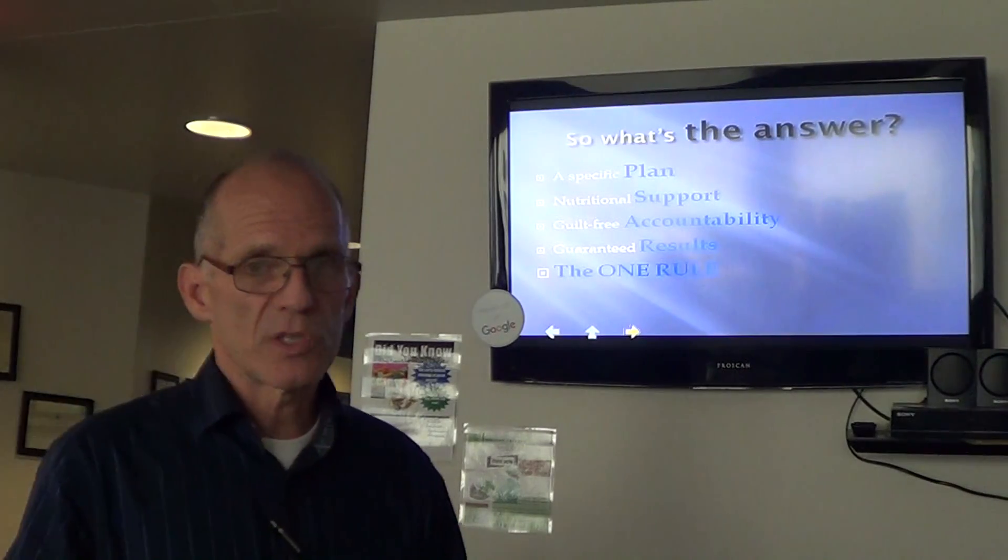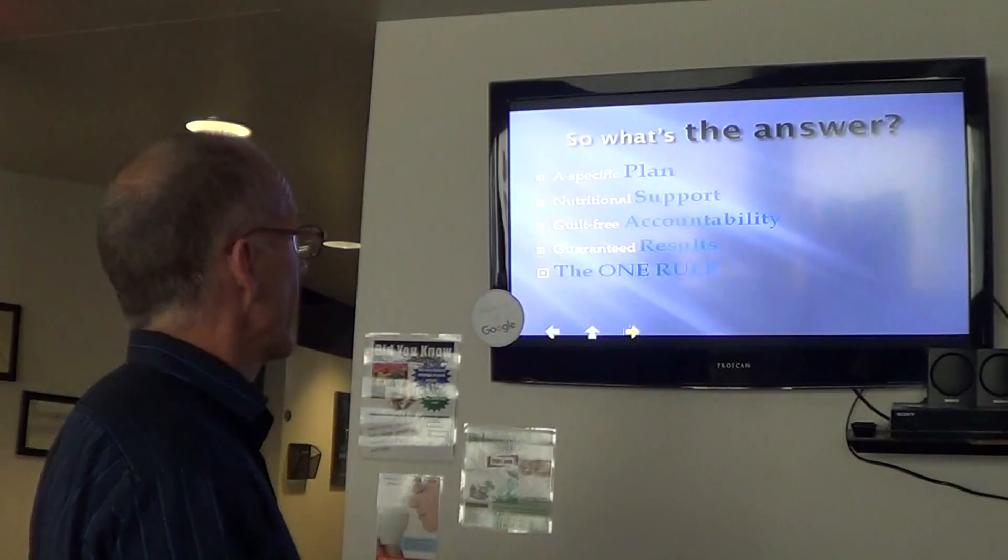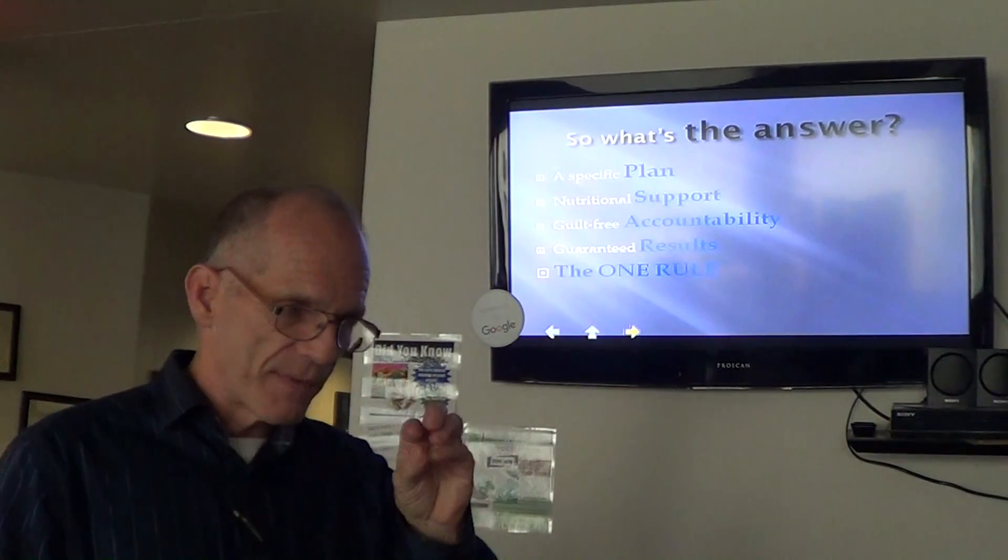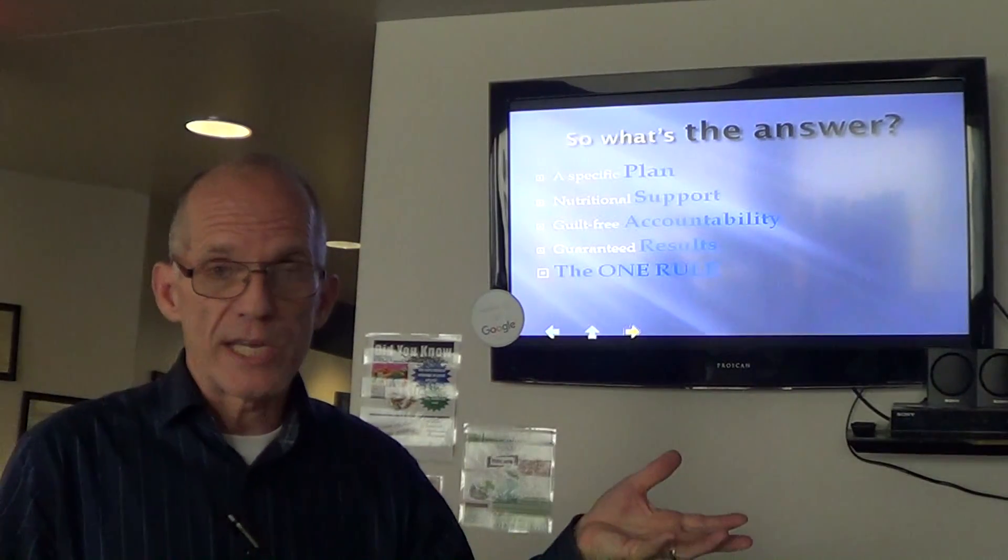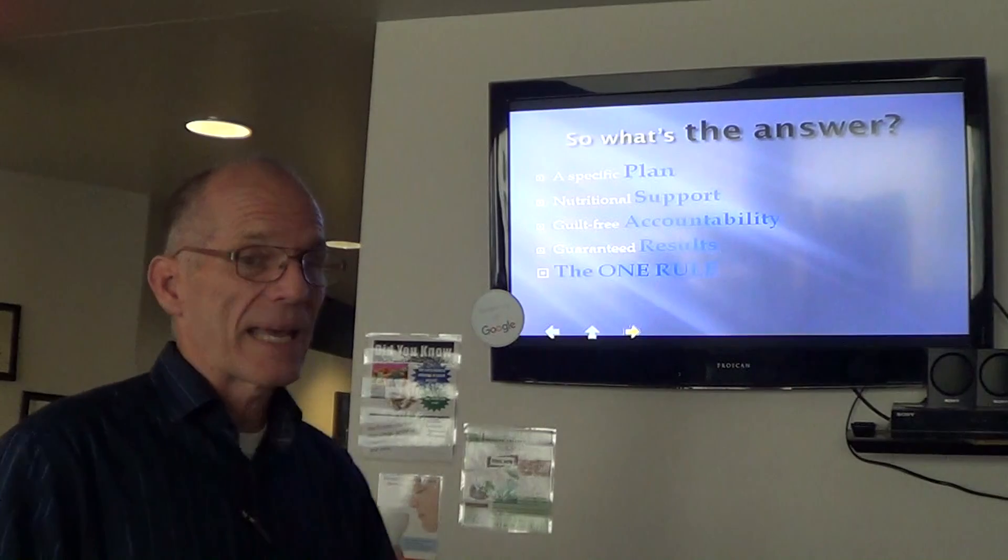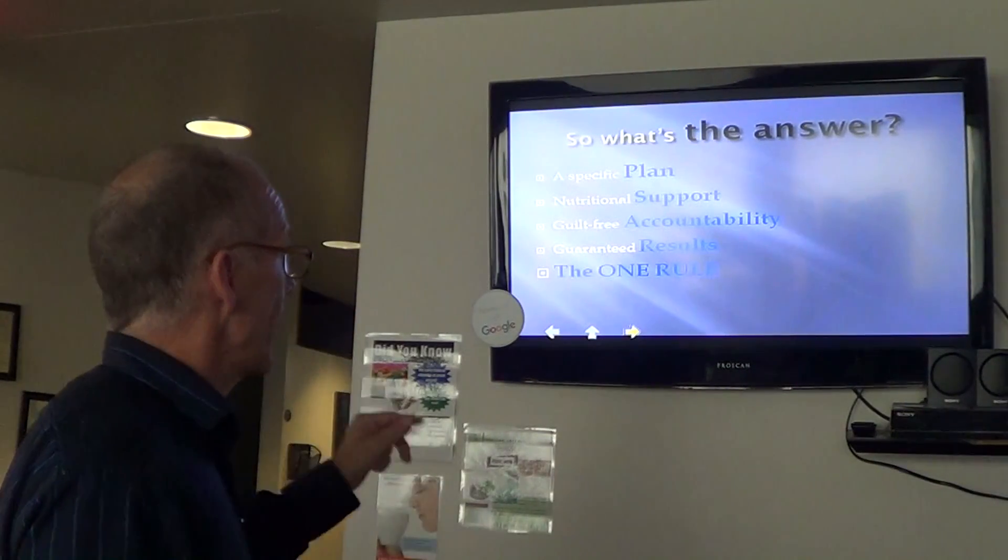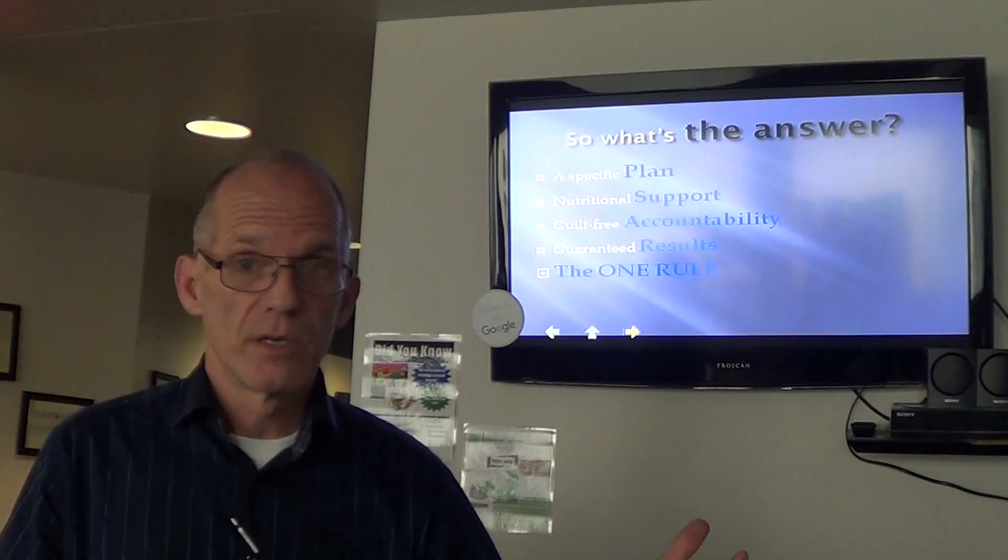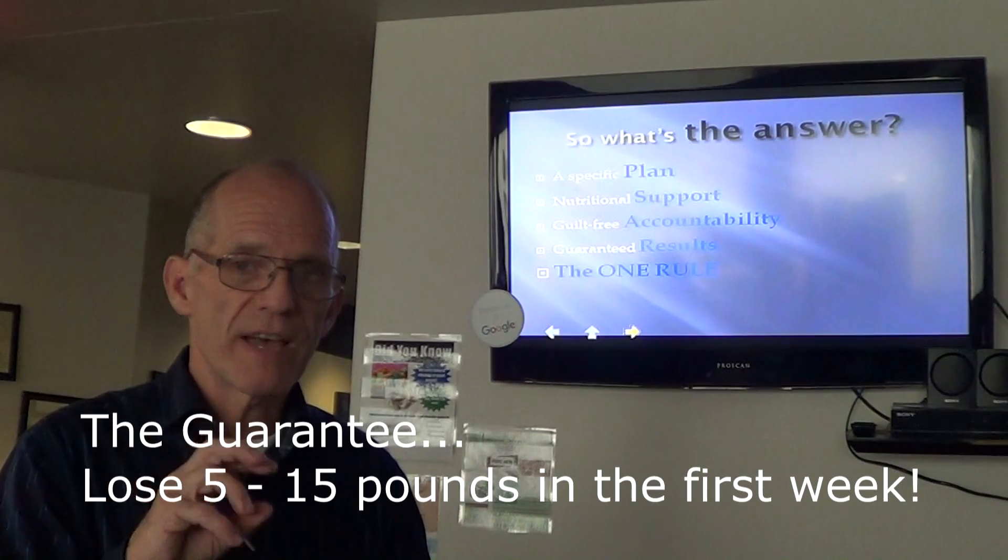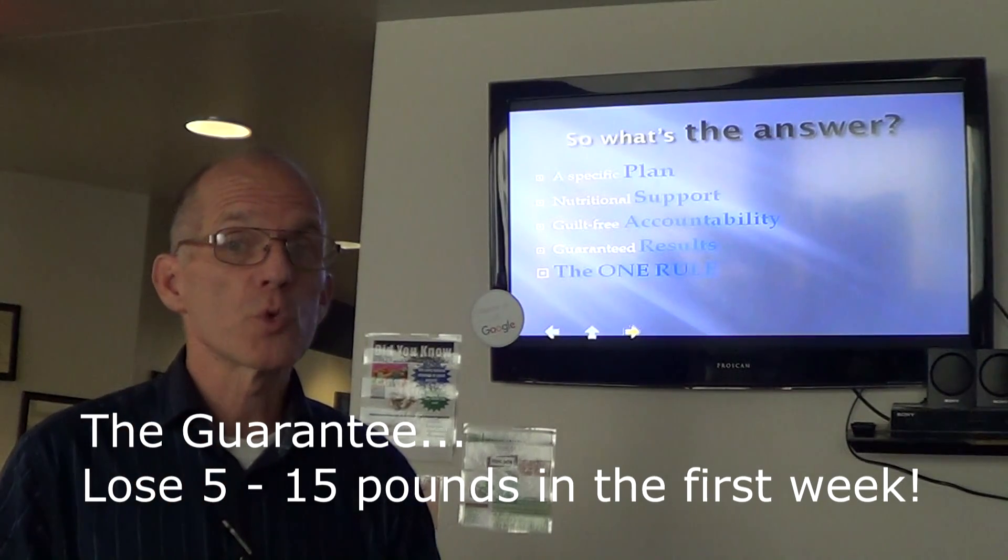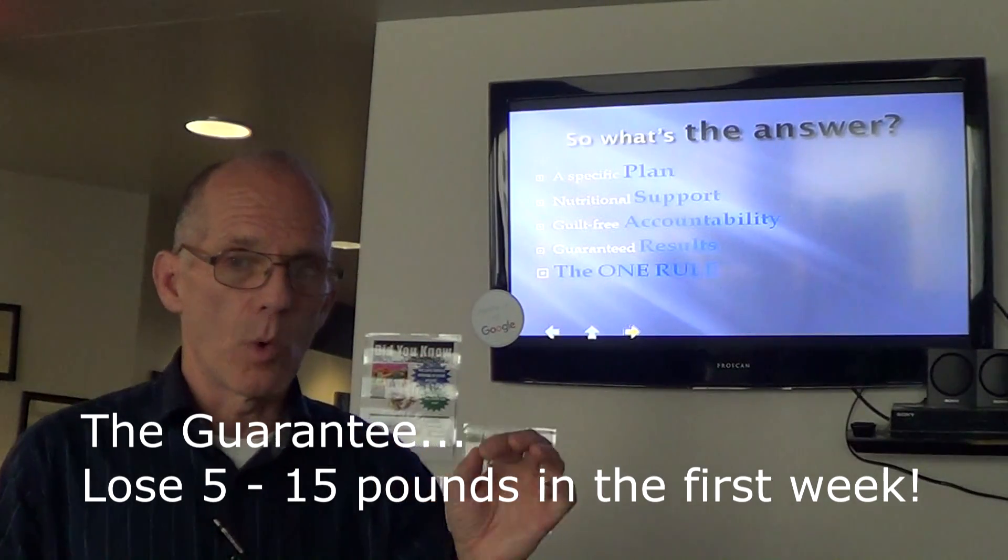So how do we get past all this? What's the plan? What we're going to talk about tonight in the One Rule is an encompassing plan. It gives us a specific plan to change our eating. It gives us support for the nutritional changes we're going to make. It gives us accountability to help stick with the changes we want to make. And there are actually guaranteed results. Following the One Rule for 30 days will guarantee you lose 5 to 15 pounds in the first week. And then you can go on from there. The One Rule is very effective at what we're proposing.